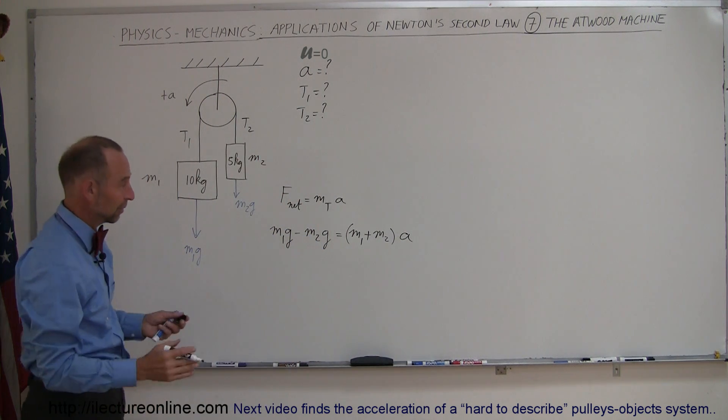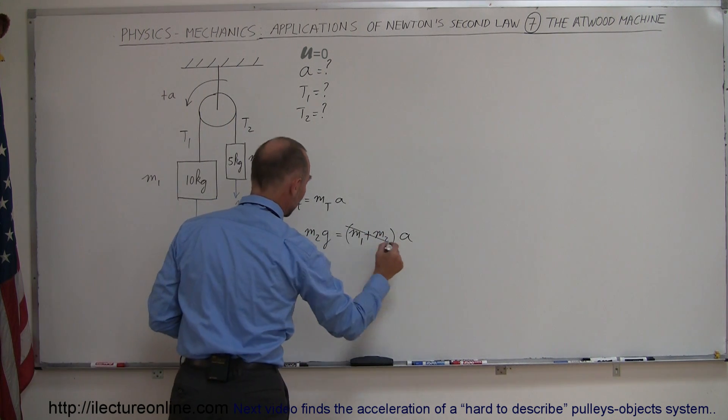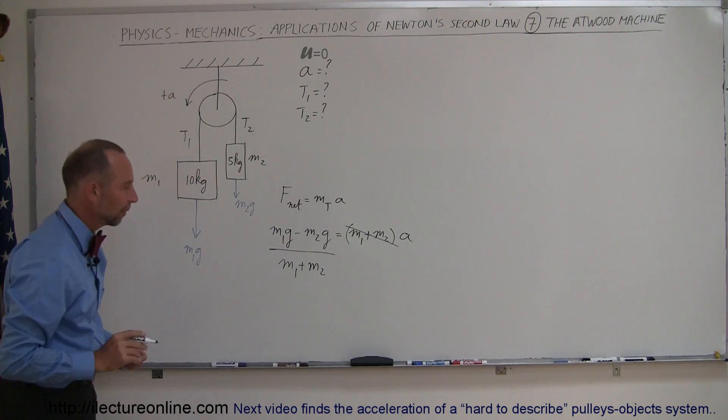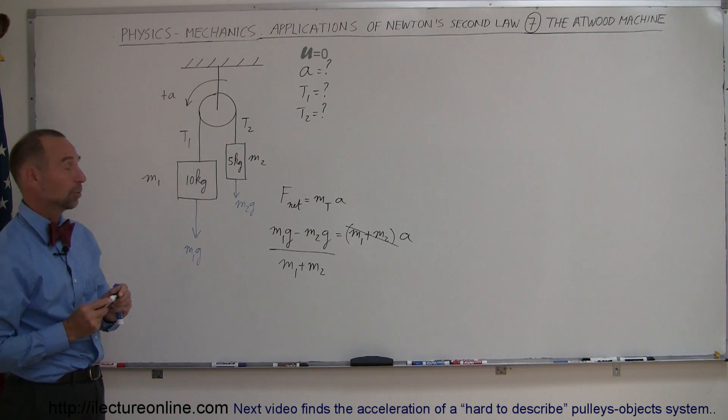And of course at this point if we divide both sides by M1 plus M2 we have the equation for the acceleration of the Atwood machine.